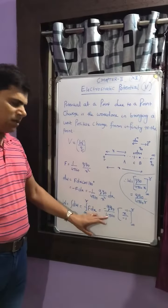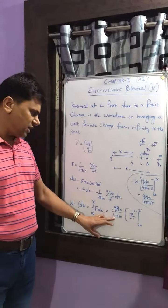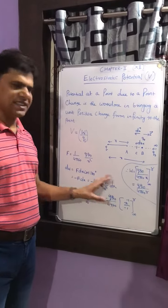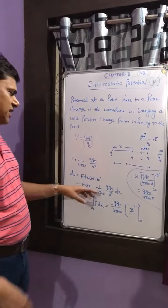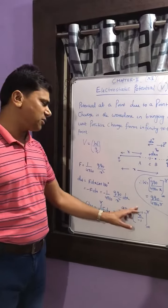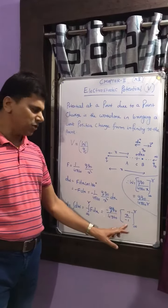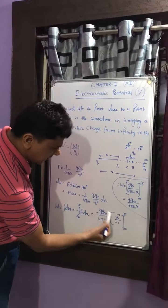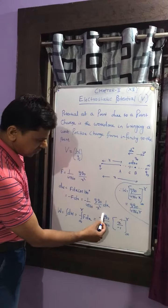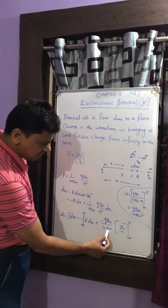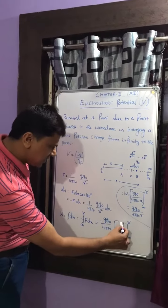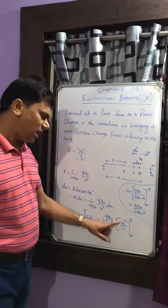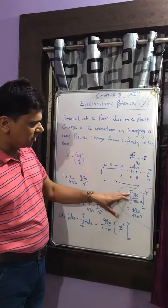We have minus q·q₀ by 4πε₀, then x to the power minus 2 dx. When we do the integration we get x to the power minus 1 divided by minus 1, evaluated from infinity to r. The two negatives cancel, so we get q·q₀ by 4πε₀, and x to the power minus 1 is simply 1 by x.